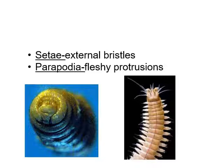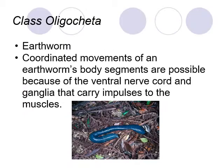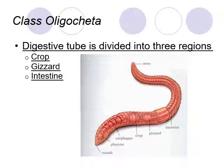Some annelids have parapodia, which are fleshy protrusions on the side like little feet that help with movement. Class Oligochaeta includes the earthworms. These organisms have coordinated movement throughout the body via a ventral nerve cord running down the back and a cerebral ganglia — a simple brain — that carries movement signals. The earthworm has a simple but effective digestive system: food moves from the crop, where it is stored, to the gizzard, where it is ground up, then to the intestines, and finally waste exits through the excretory system.